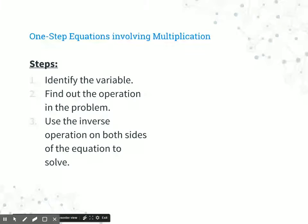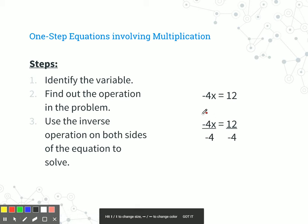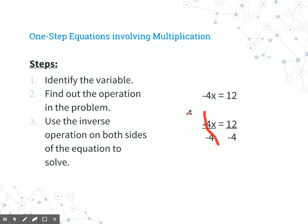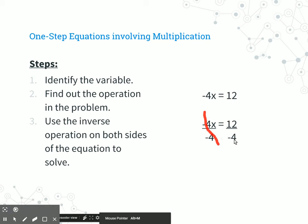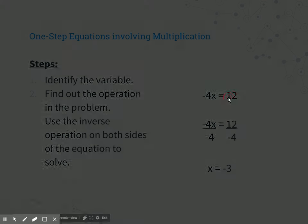Now let's look at one with multiplication. The operation is multiplication and the variable is on the left side. We want to get that variable by itself, so the opposite of multiplying by negative 4 would be to divide by negative 4. The negative 4s cancel out, allowing x to be left by itself. 12 divided by negative 4 is negative 3. If you plug that in, negative 4 times negative 3 is a positive 12.